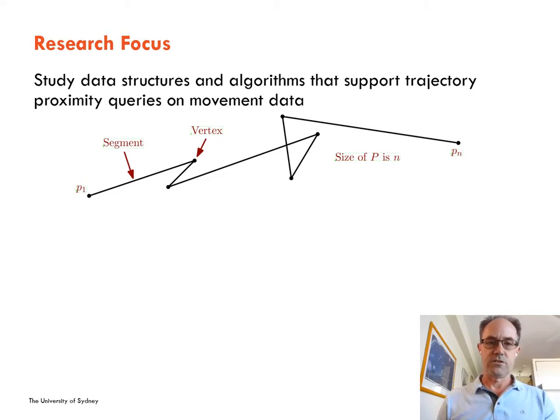In our setting, a trajectory is a polygonal curve through a contiguous sequence of vertices where each vertex pair is connected by a straight line segment. Here's an example trajectory p that has n vertices.